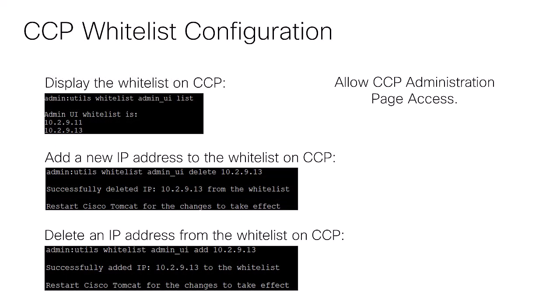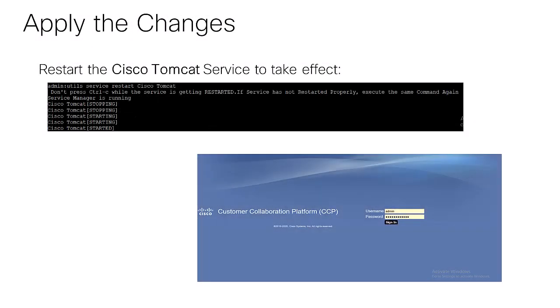By default, you won't be able to access the CCP administration page — you will see a completely blank page. This is because of a CCP security feature called the allowlist. The administrator can manage this, controlling access for different endpoints in the environment. The administrator can add and delete IP addresses of endpoints which will have access to the CCP administration page. To apply any changes made to the allowlist, the Cisco Tomcat service must be restarted, and after that you will be able to access the CCP from the IP addresses you added to the list.